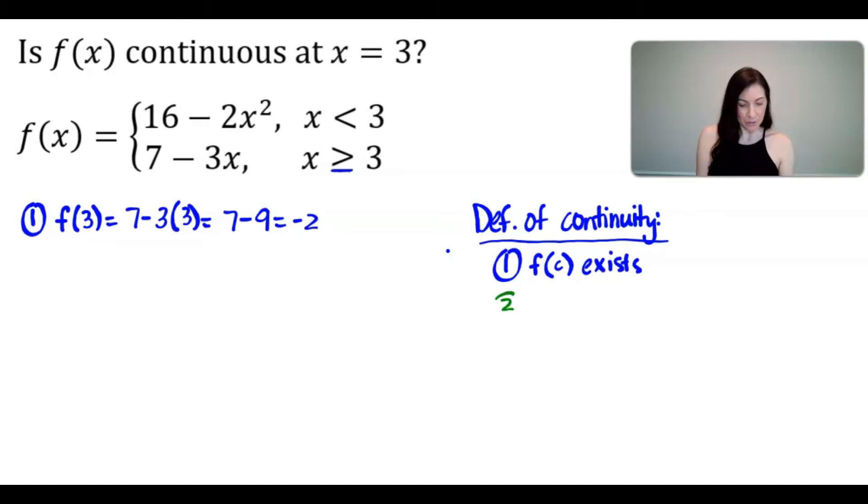Moving on to step 2. In step 2, the limit as x approaches the c value, in our case 3, of f of x needs to exist. And in order to determine whether this limit exists in a piecewise function where you have one piece of a function where x is less than 3 and one piece of a function where x is greater than or equal to 3, we really need to think about this limit as approaching x from both the left and the right sides and make sure that those limits are equal.